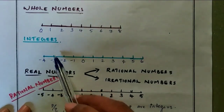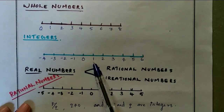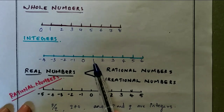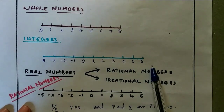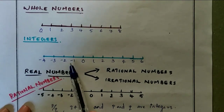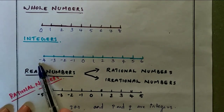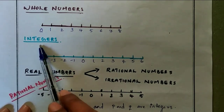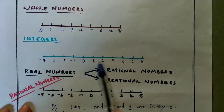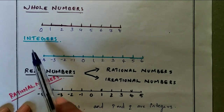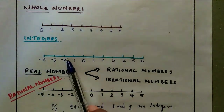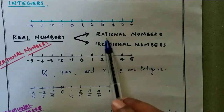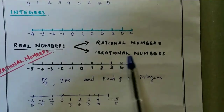The next number system is integers. Integers include positive numbers and negative numbers. Positive numbers are one, two, three, four, five, six, and negative numbers are negative one, negative two, negative three, negative four, and also including zero. This number system is called integers. The next number systems are rational numbers and irrational numbers.